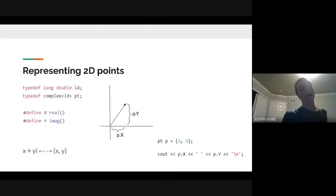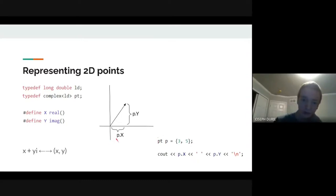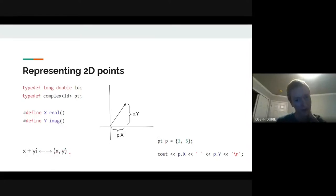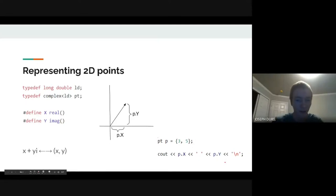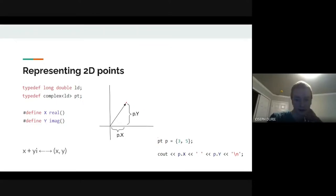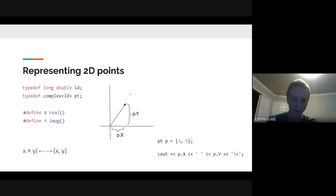The main tool we're going to use is the built-in complex number class to represent points. You take x + yi and let that correspond to the coordinate (x, y), essentially using the complex plane. We're thinking of these not as complex numbers but as arbitrary points, and we'll use points and vectors interchangeably since a point is just a vector from the origin.